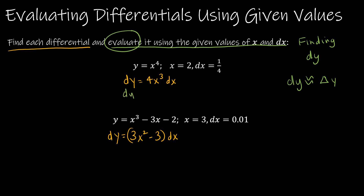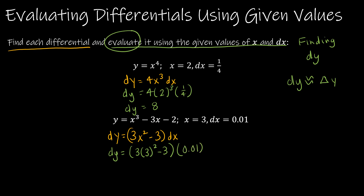Evaluating is just as easy as it looks. We replace x with 2 and dx with 1/4. We find that dy is 8, because 4 and 1/4 cancel to 1, and 2 to the third is 8. For the next question, dy equals 3 times 3 squared minus 3, all multiplied by 0.01 — so 3 times 27 minus 3 is 24, times 0.01, giving dy equals 0.24.